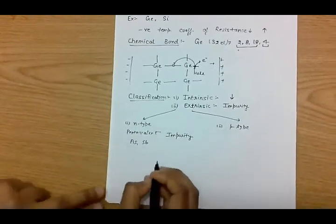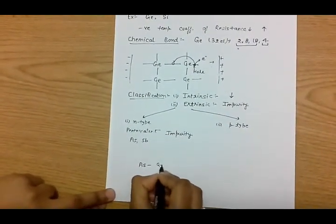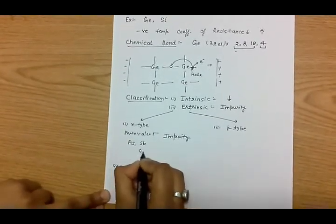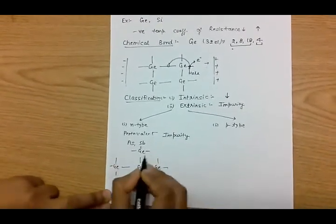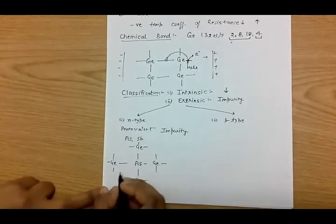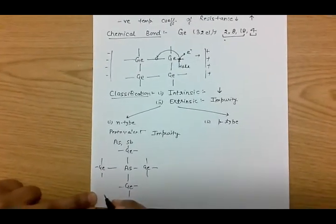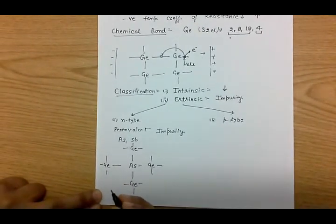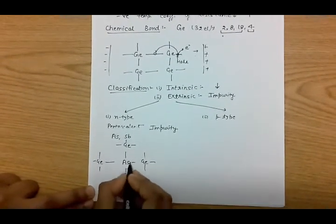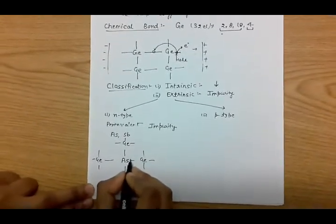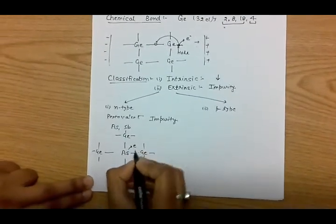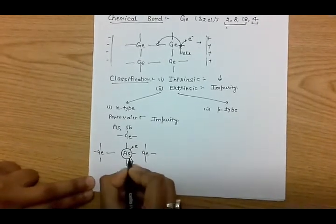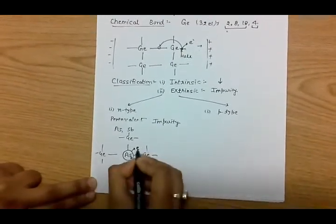When arsenic is added to germanium, four of its electrons are used to form four covalent bonds, but the fifth one is not used for bond formation. It is not completely detached from the atom, but even with a very small amount of energy it can be detached. It is found that even at room temperature this energy is achieved, so the fifth electron becomes free, resulting in the formation of a positively charged impurity ion.